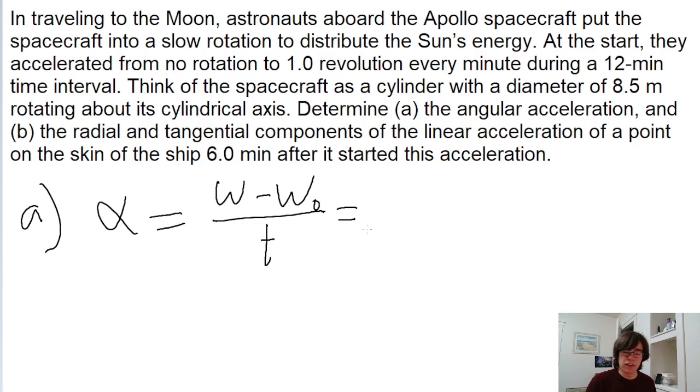So in this case, the final angular velocity is one revolution per minute, which we usually want to represent in radians per second. We multiply by 2π because 2π radians are equivalent to one revolution, and then we divide by 60 because one minute equals 60 seconds.